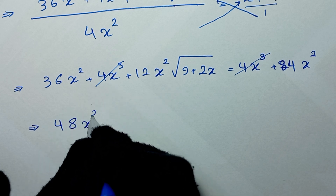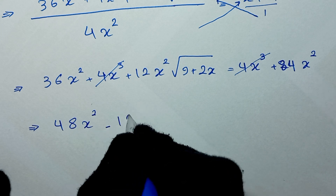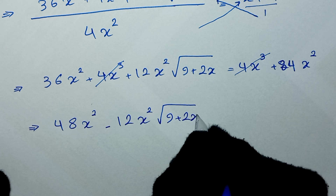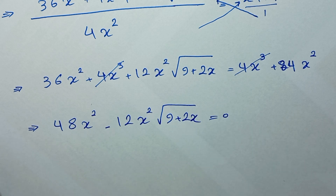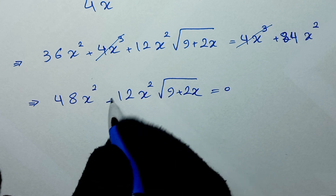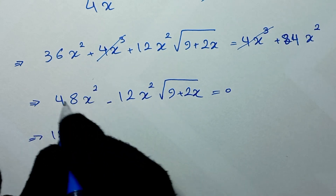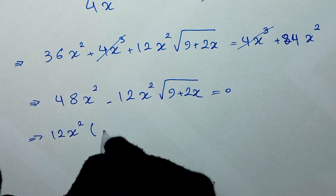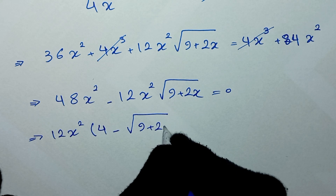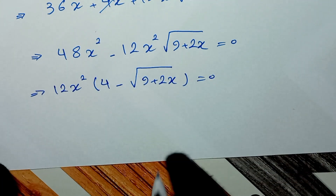We move terms to one side, giving 48x² minus 12x² square root of (9 plus 2x) equals 0. Factoring out 12x², we get 12x² times (4 minus square root of (9 plus 2x)) equals 0.